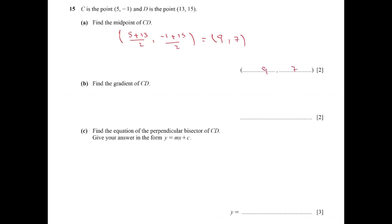Find the gradient of CD. To find the gradient of CD, m equals (y2 - y1) / (x2 - x1), which means 16 over 8, equals 2.